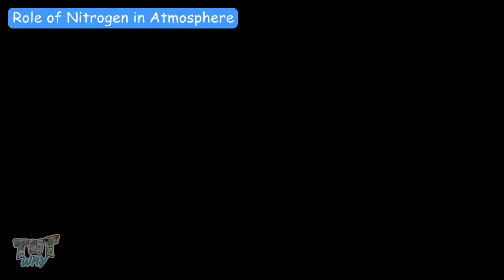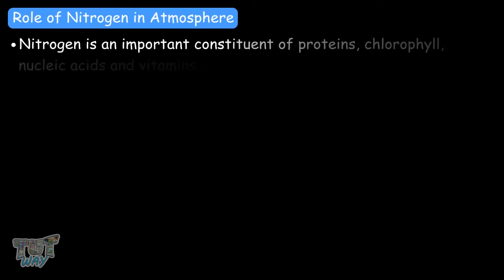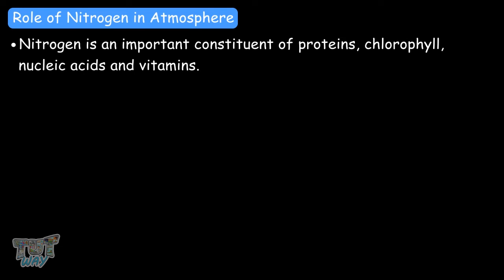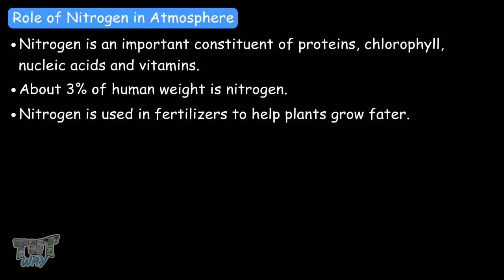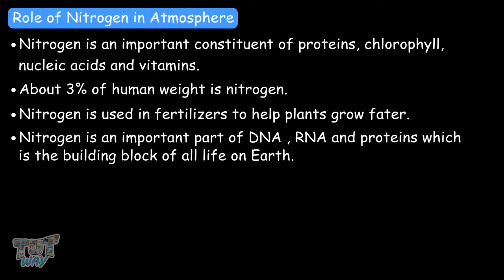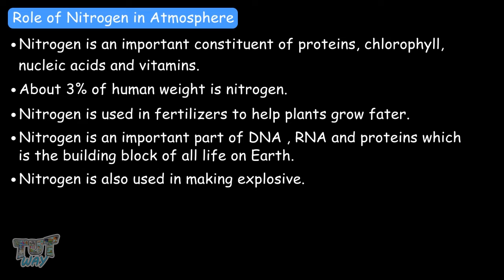Now let's learn the role of nitrogen in our atmosphere. Nitrogen is an important constituent of proteins, chlorophyll, nucleic acids, and vitamins. Around 3% of the human body weight is nitrogen. Nitrogen is used in fertilizers to help plants grow faster. Nitrogen is an important part of DNA, RNA, and proteins, which are the building blocks of all life on Earth. Nitrogen is also used in making explosives. So, nitrogen is a very important gas in the Earth's atmosphere.